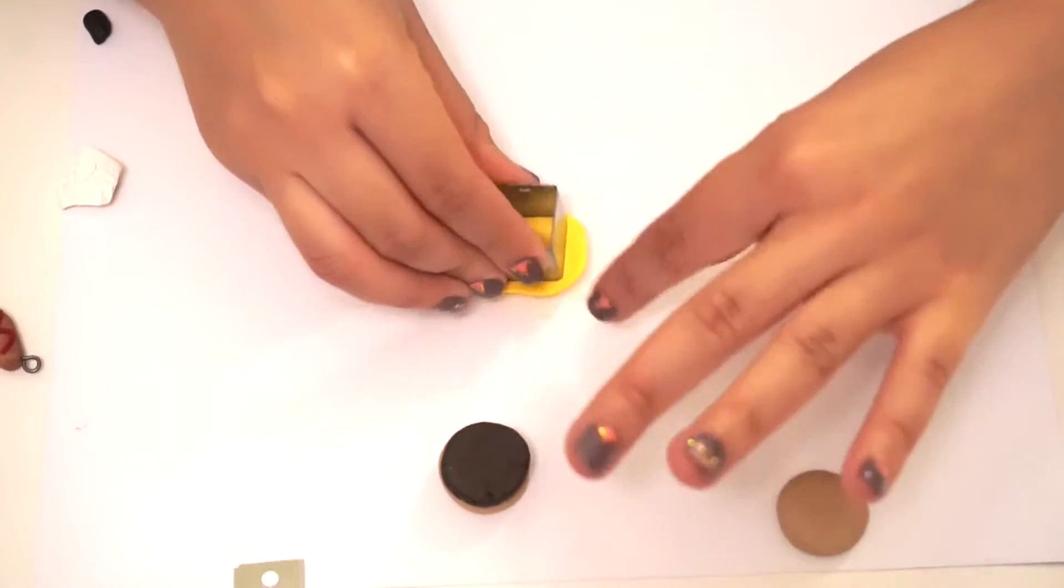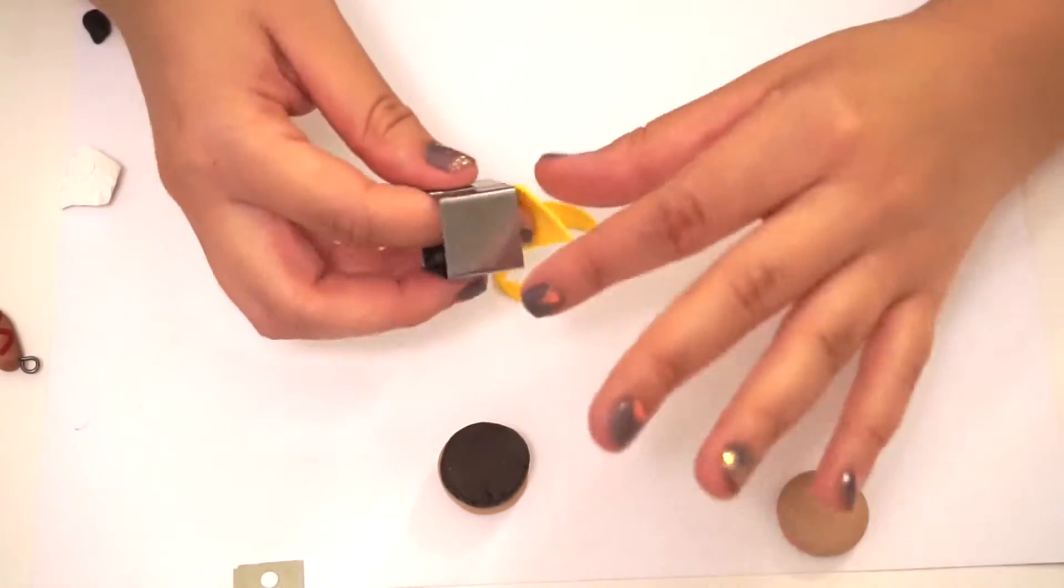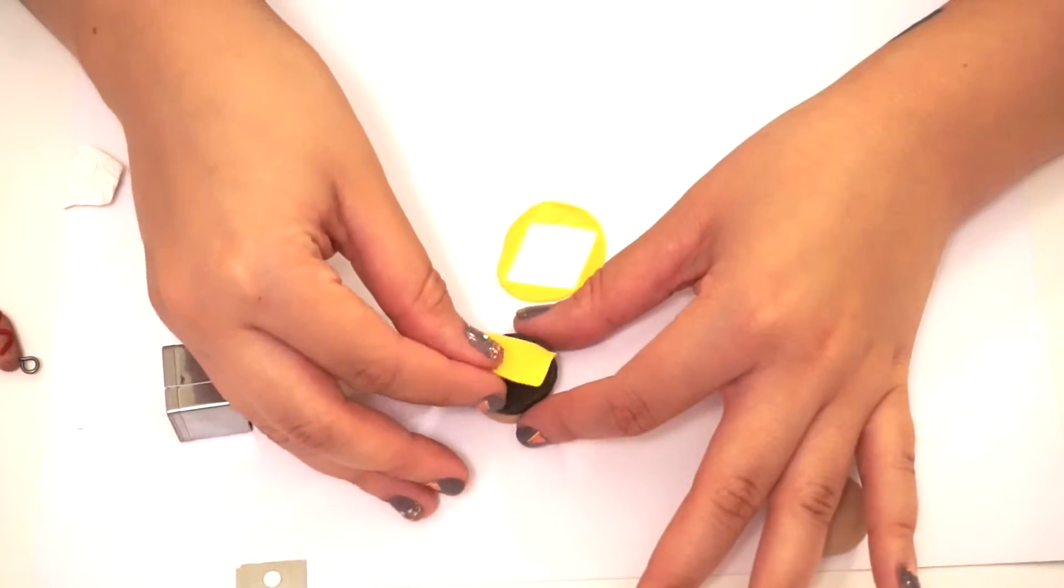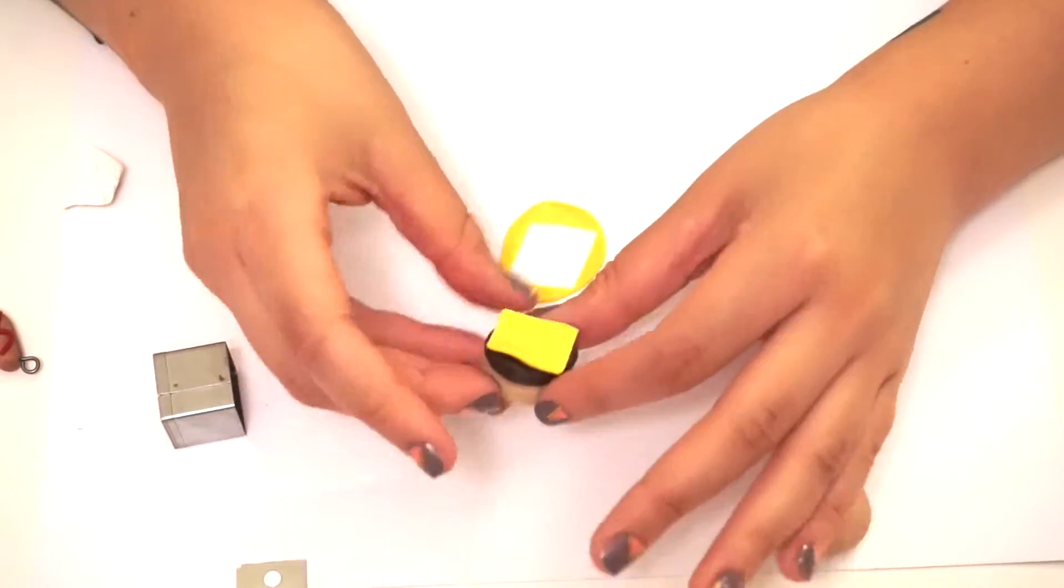Those are Sculpey clay cutters that I got at Joann's. And then just lay it on top of your meat and bend the edges just to make it look like it's a little bit melted.